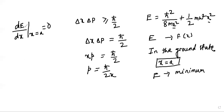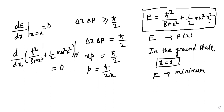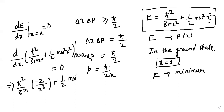So we take the derivative: d/dx of [ℏ²/(8mx²) + (1/2)mω²x²] = 0 at x = a. Taking the derivative gives ℏ²/(8m) · (−2/x³) + (1/2)mω² · 2x, evaluated at x = a, must equal zero.